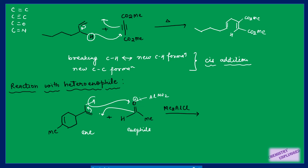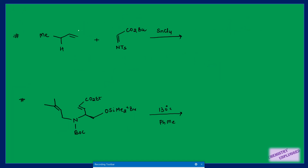The proton is easily transferred to this oxygen, this bond shifts to form a new sigma bond, and this bond shifts to form a new pi bond, giving the final molecule. In another heteroenophile example, we have a carbon-double bond-nitrogen attached with a tosyl group, again using a Lewis acid. The allylic hydrogen is identified, the proton is transferred to the nitrogen, the bond shifts to form a new bond, and we get the final product.